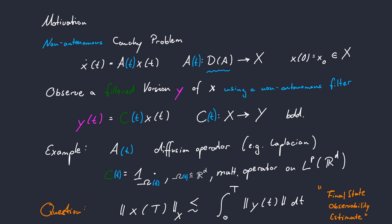In the end, the main question remains the same. Do we have a final observability estimate for our non-autonomous Cauchy problem?